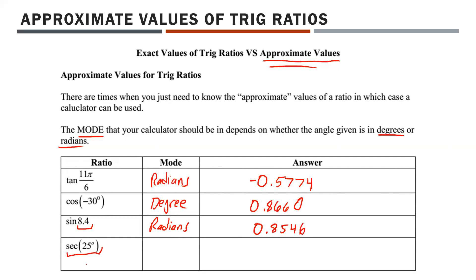For secant 25 degrees: there's no secant button on your calculator, so use the reciprocal ratio. Enter 1 divided by cosine 25 in degree mode — that gives 1.1034. Also, cosine negative 30 degrees in degree mode gives 0.8660. Those are your approximate values — just throw them right in your calculator.